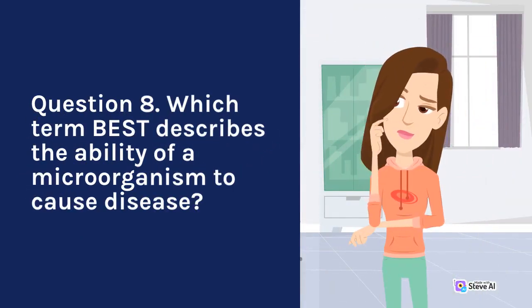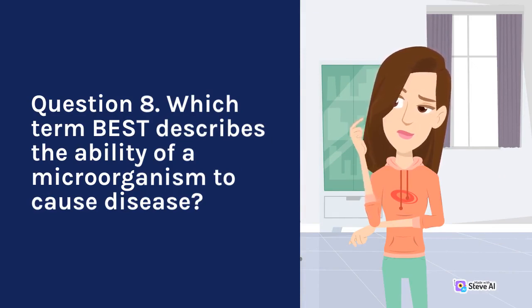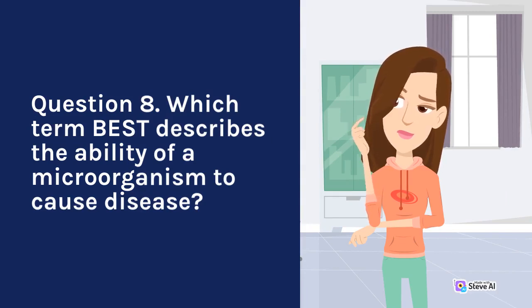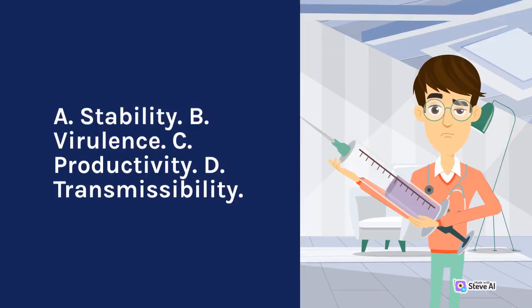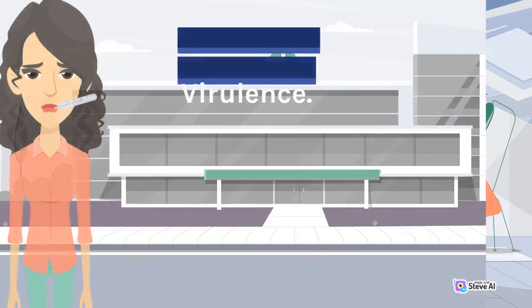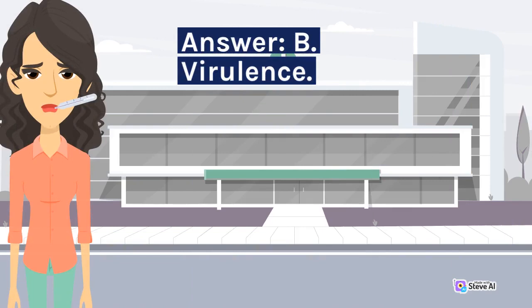Question 8. Which term best describes the ability of a microorganism to cause disease? A. Stability. B. Virulence. C. Productivity. D. Transmissibility. Answer: B. Virulence.